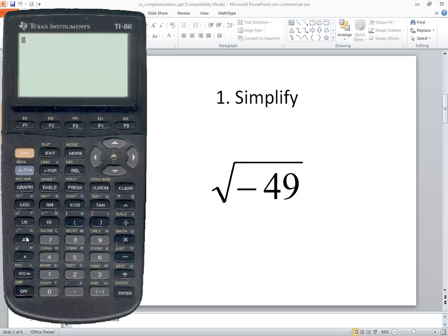To do the square root, I do second and then the x squared. Put the square root and a beginning parenthesis. It's always good practice to put that on there. Then negative 49 and closing parenthesis. When I press enter, one of two things will happen.